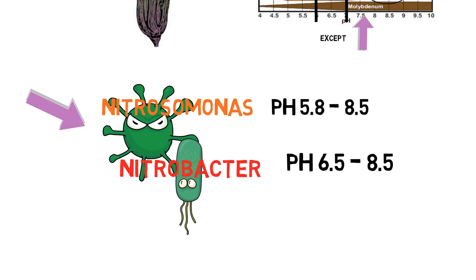So this tells us here, we need to meet somewhere in the middle. So 5.8 to 8.5 for Nitrosomonas, and we see that Nitrobacter is from 6.5 to 8.5. So the lowest we can go is 6.5. So what we can do now is take all of our optimal pH ranges and we can put them together and find out which one makes the most sense.